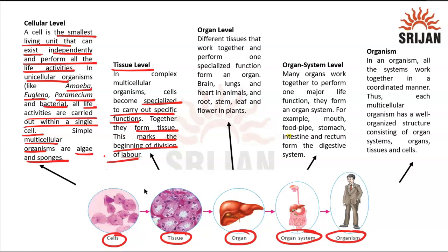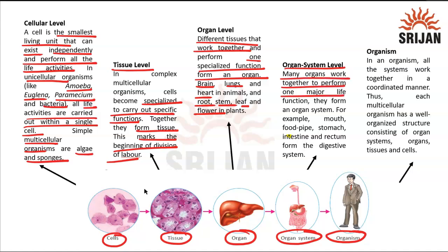Different or sometimes similar tissues come together and work together to perform one specialized function, which forms an organ. Examples include the brain, lungs, and heart; for plants it could be root, stem, leaf, or flower. These organs are made up of different kinds of tissues which are made up of similar cells. Then these organs form an organ system — like the digestive system, excretory system, or reproductive system — where many organs work together to perform one major life function.